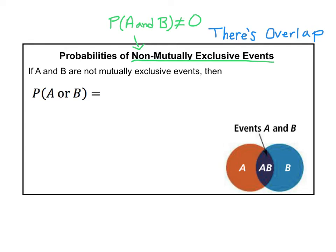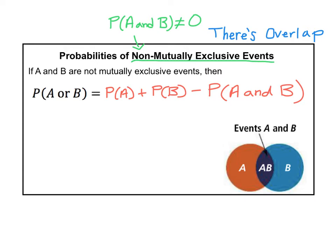Calculating the probabilities of non-mutually exclusive events is a little bit different than calculating the probability of mutually exclusive events. Remember that mutually exclusive events are two events that cannot both happen at the same time — there's no possible overlap. When events are not mutually exclusive, there is overlap and the probability of A and B does not equal zero, meaning it's possible for A and B to both occur at the same time. So when you calculate the probability for non-mutually exclusive events, you use the formula: probability of A or B equals the probability of A plus the probability of B minus the probability of A and B. What you're doing at the very end — subtracting A and B — is subtracting the overlap.